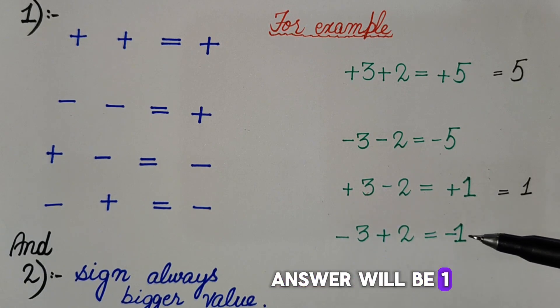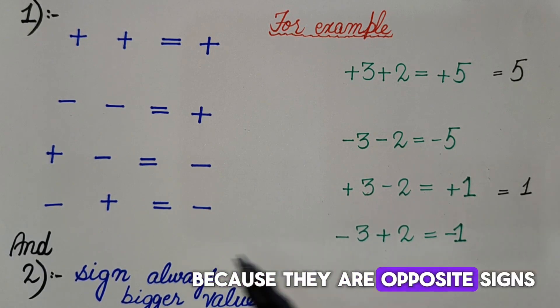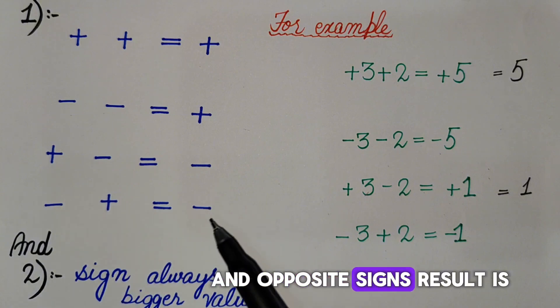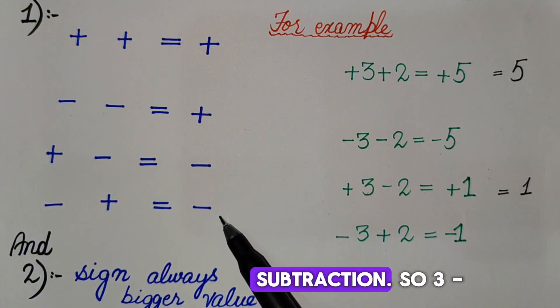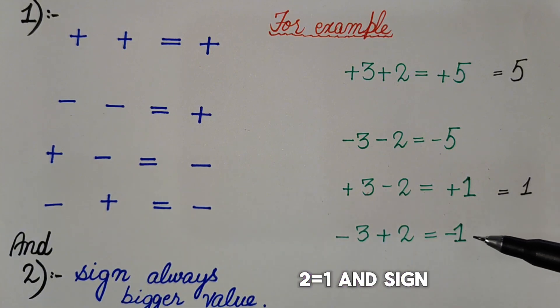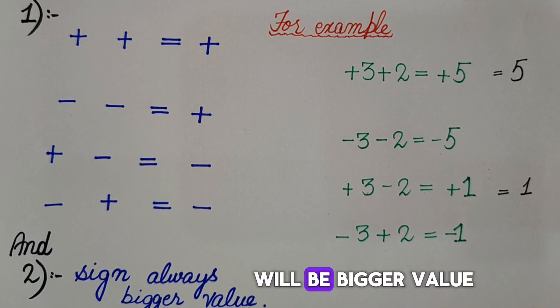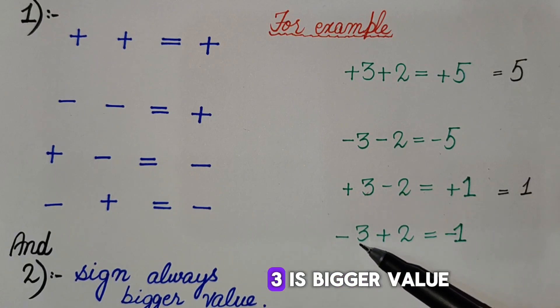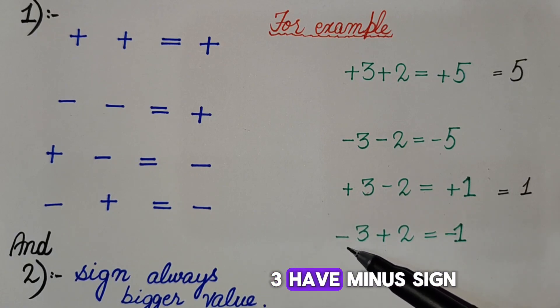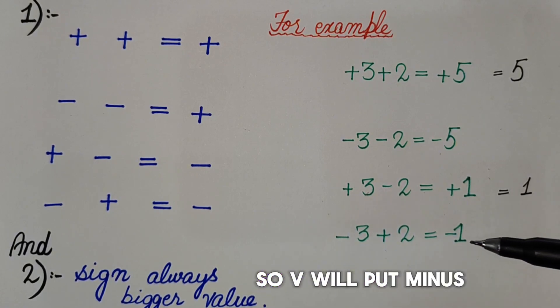Answer will be one because there are opposite signs and opposite sign result is subtraction. The three minus two is one, and sign will be bigger value. Three is bigger value, three have minus sign, so we will put minus.